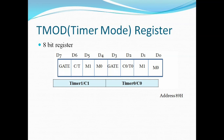Both timers 0 and 1 use this register, that is the TMOD or Timer Mode register. The TMOD is basically an 8-bit register in which the lower 4 bits are set aside for timer 0 and the upper 4 bits are set aside for timer 1. In every case the lower 2 bits are used to set the timer mode and the upper 2 bits are used to specify the operation of the particular timer. Now let us discuss all these bits one by one.